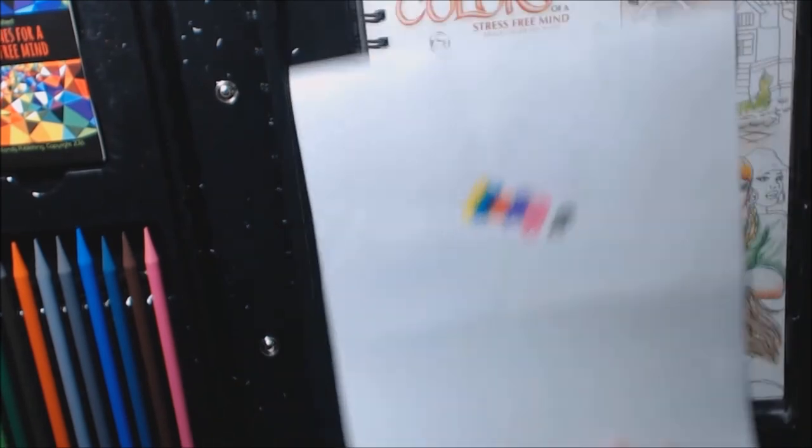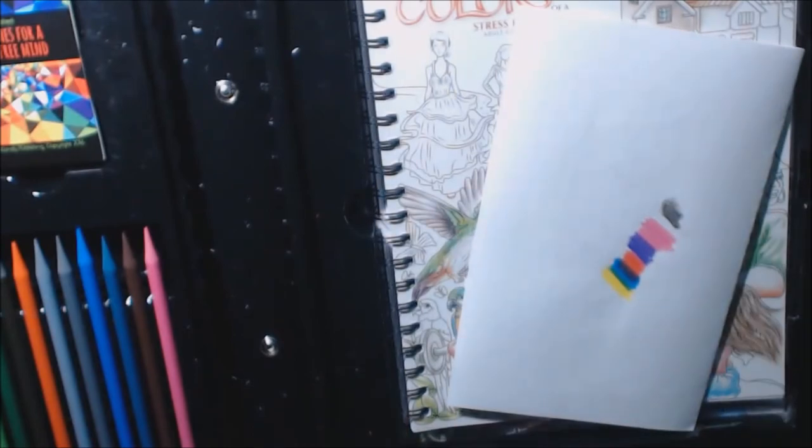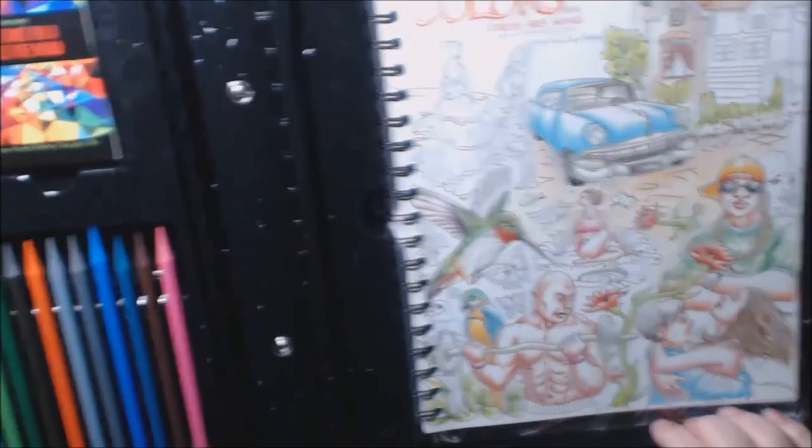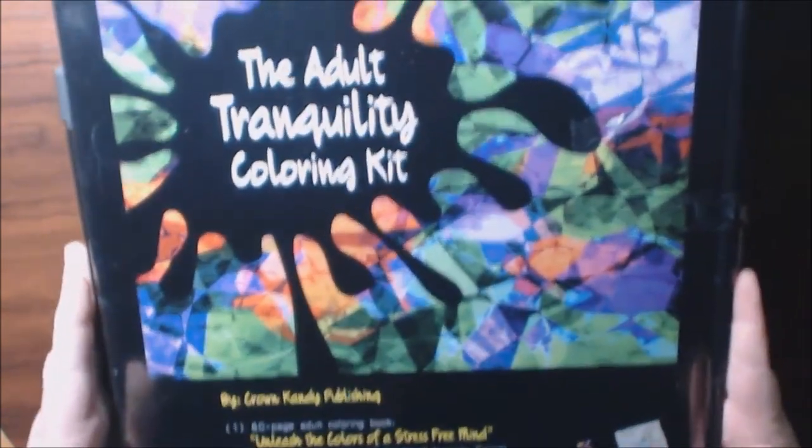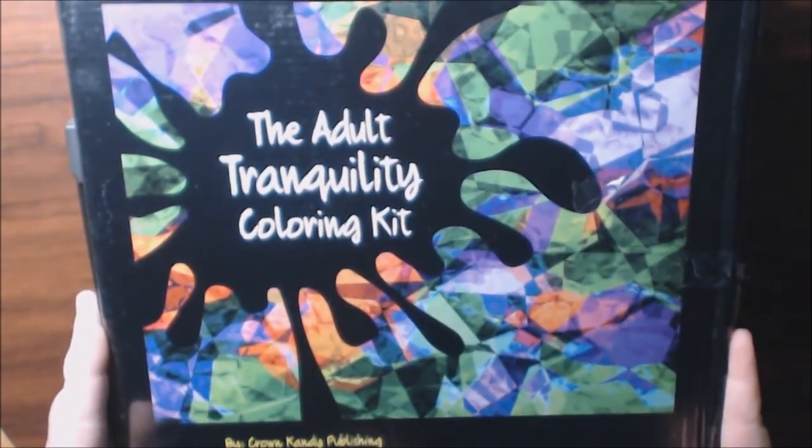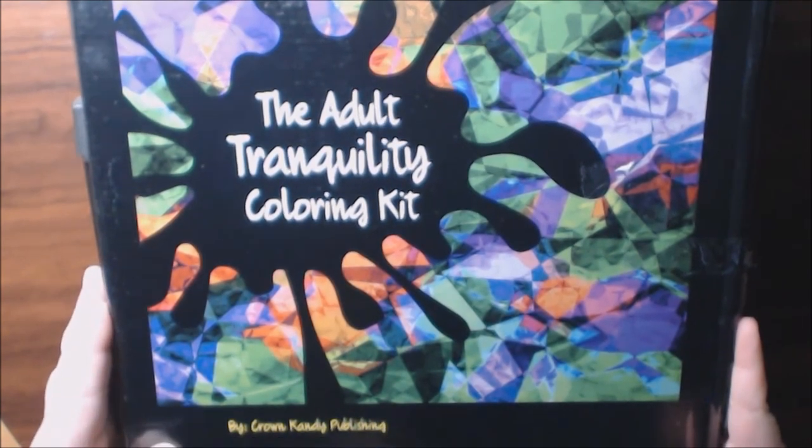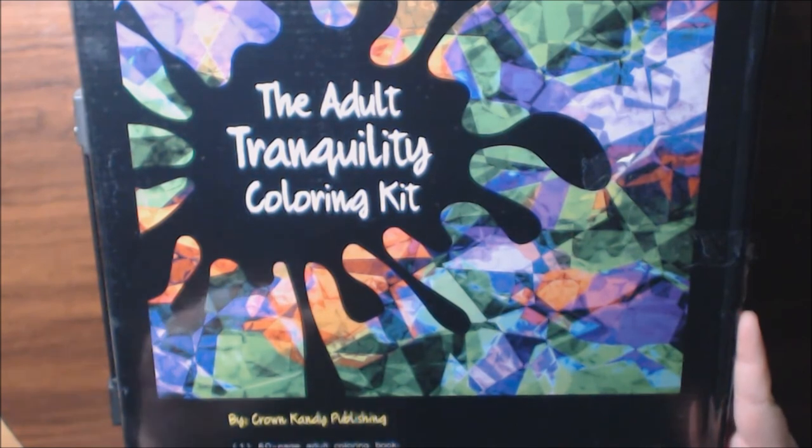Okay guys, that is it. If you have any questions or comments, leave them down at the bottom. I'm going to post a link where you can purchase this kit. And like I said, it is called the Adult Tranquility Coloring Kit by Crown Candy Publishing, and that is candy with a K. I'll post a link down there at the bottom.